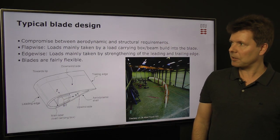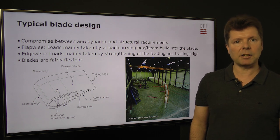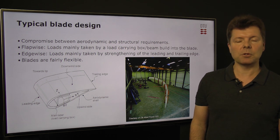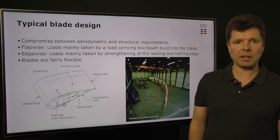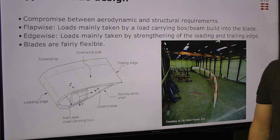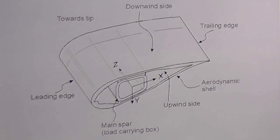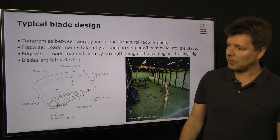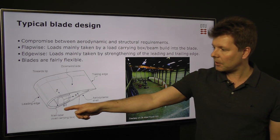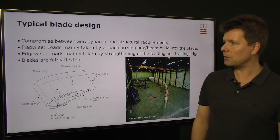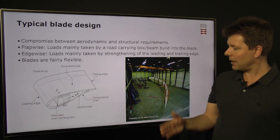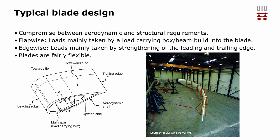How is a typical blade designed? It's a compromise between the aerodynamic and the structural requirements. From an aerodynamic point of view, we want thin airfoils, but from a structural point of view, we want thick airfoils that can carry the loads. The flap-wise loads from the wind are often taken by a load-carrying girder inside the blade, while the edge-wise loading from gravity is carried by strengthening the leading edge and the trailing edge of the blade. As you can see in the picture, these blades are very flexible.